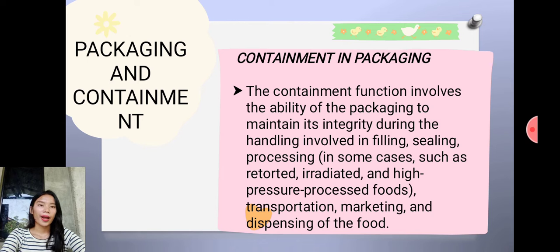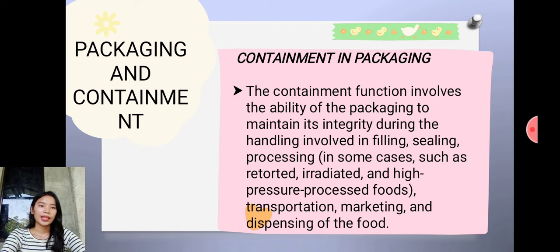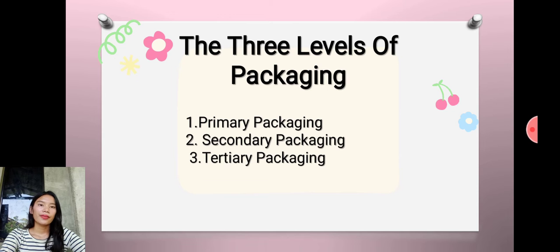The containment function involves the ability of the packaging to maintain its integrity during the handling involved in peeling, sealing, processing, transportation, marketing, and dispensing of the food. There are three levels of packaging: primary, secondary, and tertiary packaging.